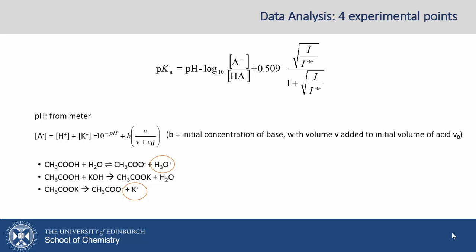The concentration of protons can be estimated by 10 to the minus pH. The concentration of potassium ions will be equal to the initial concentration of the base we add, times the dilution factor, where V is the volume of the base we add, and V0 is the initial volume of acid in our conical flask. That gives us the concentration of A minus.